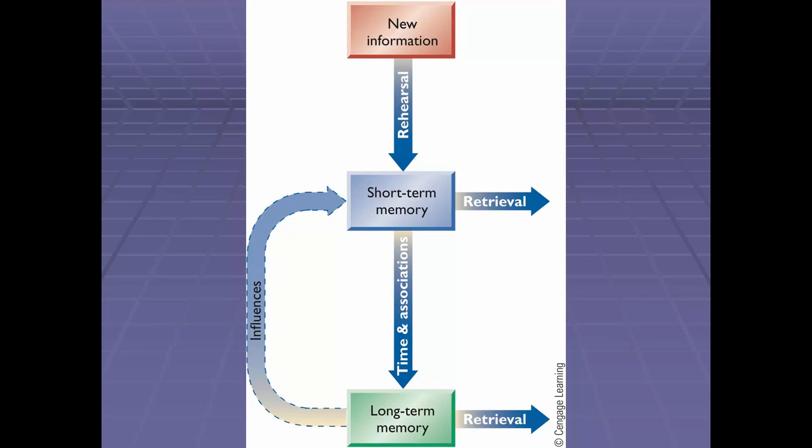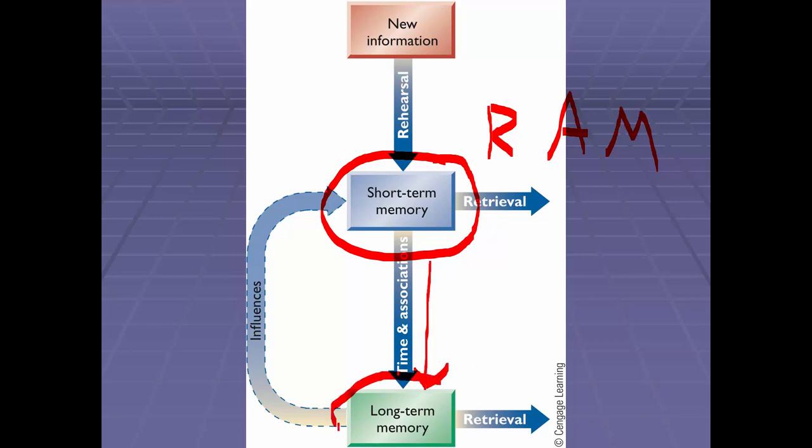So let's visually take a look at this model. Whenever we form a new memory, that new information is going to enter into our system through our senses. It would then go to something called the short-term memory. Short-term memory, for fellow computer geeks out there, is very similar to your RAM on your computer, which would be random access memory. It's referring to a temporary storage of information. That information then potentially will go to something called the long-term memory, which is kind of like the hard drive on your computer, where it is permanent and can be accessed at a later time. We're going to take a look at some of these components in the model.